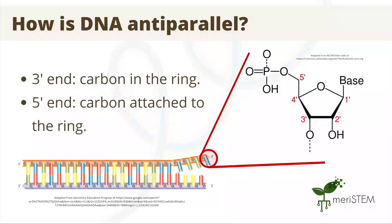So, how is DNA anti-parallel? Well, it has to do with the sugars in the backbone of DNA, which contain five carbons, four of which are found in a ring. These carbons are assigned numbers one to five, and phosphates are attached to the third carbon and the fifth carbon. The third carbon, or the three prime end, is one of the carbons found in the ring. The fifth carbon, or the five prime end, is the carbon attached to the ring. We can see this in the diagram on the right.